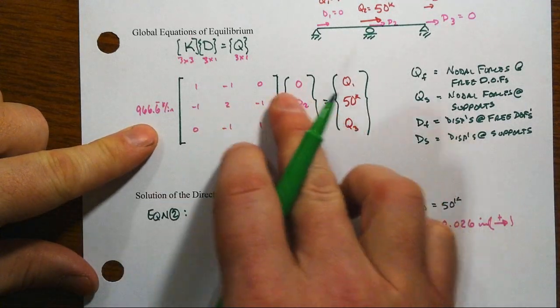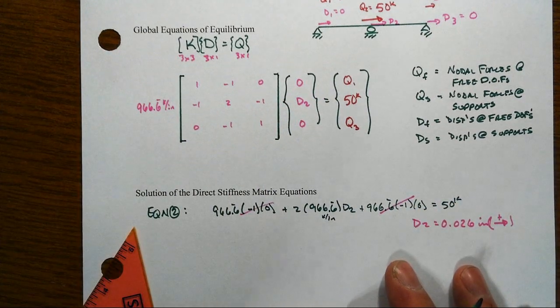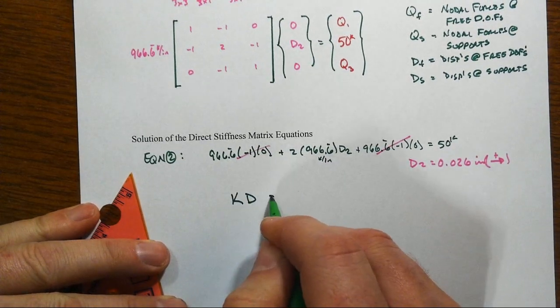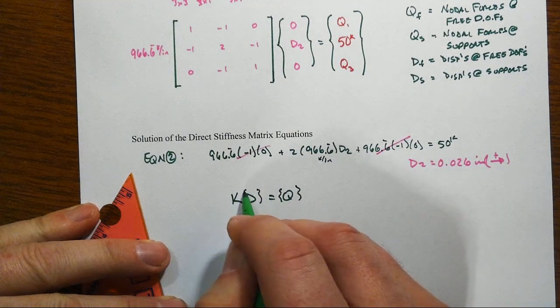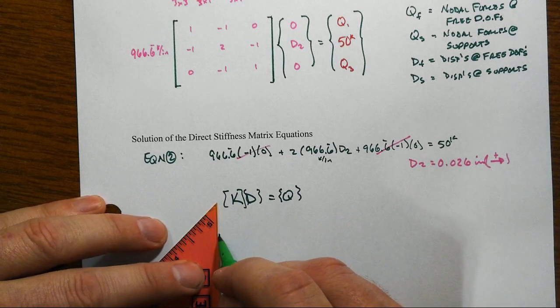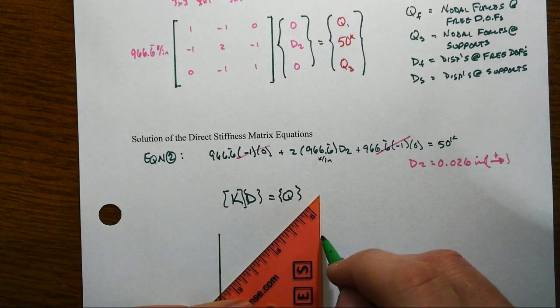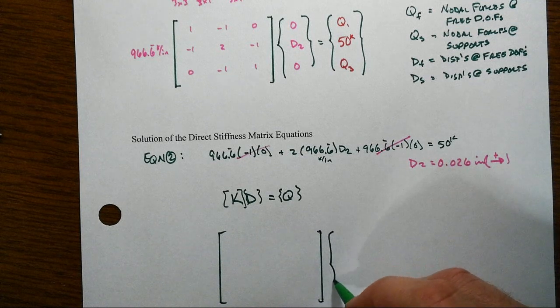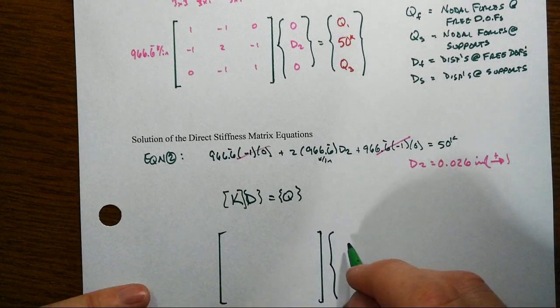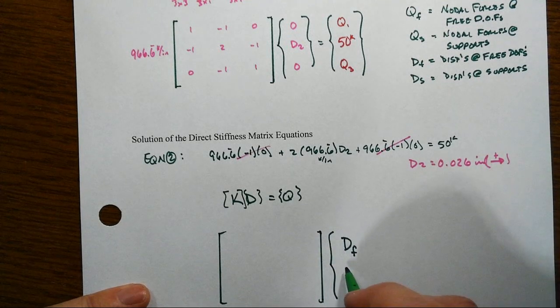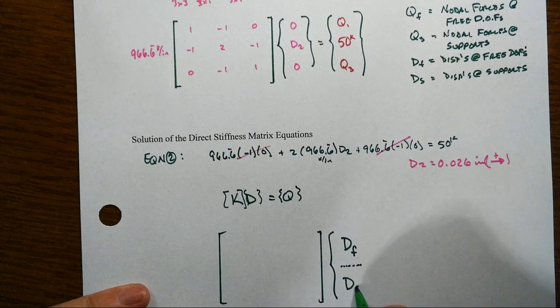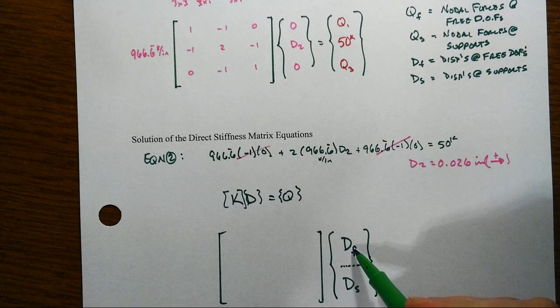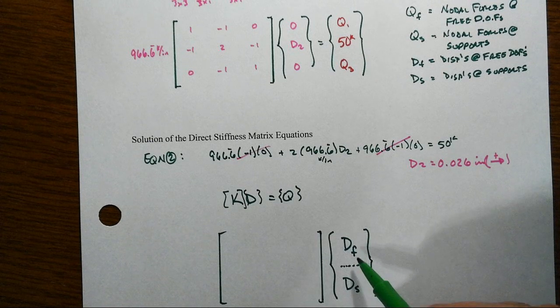We can partition up this whole system and rearrange rows and columns such that we can rewrite this general expression K[D] = {Q} into something that looks like the following. Reorganizing the rows and columns, we can partition things such that we could put all of the free degrees of freedom up on top and all the support ones here. Globally, for us, this would be D2, and this would be D1 and D3, so this would be a 1 by 1.